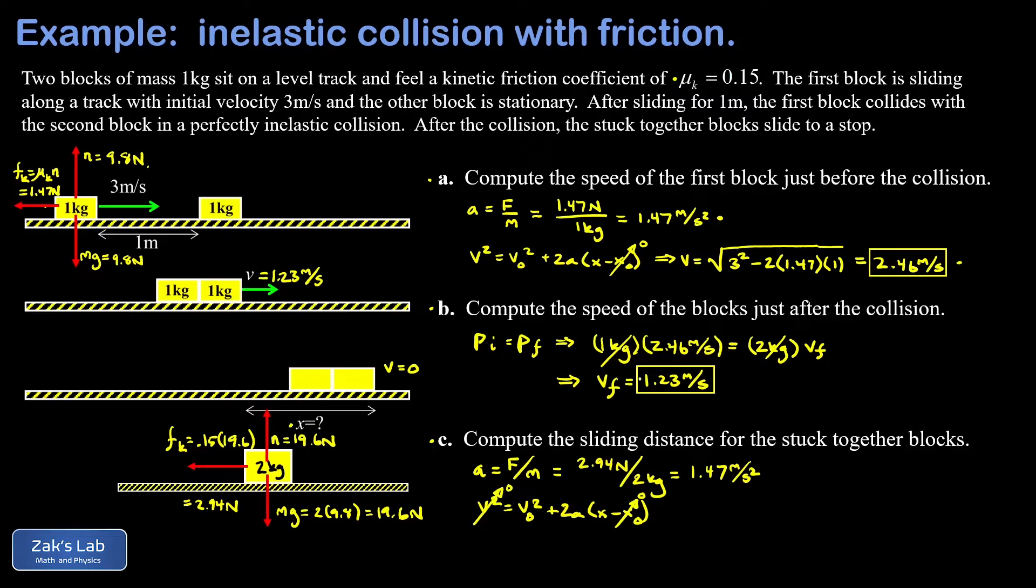And what we're after here is that little x. And we can solve for that very quickly by subtracting V naught squared from both sides and dividing by 2A. So our sliding distance is going to be a negative V naught squared divided by twice the acceleration.